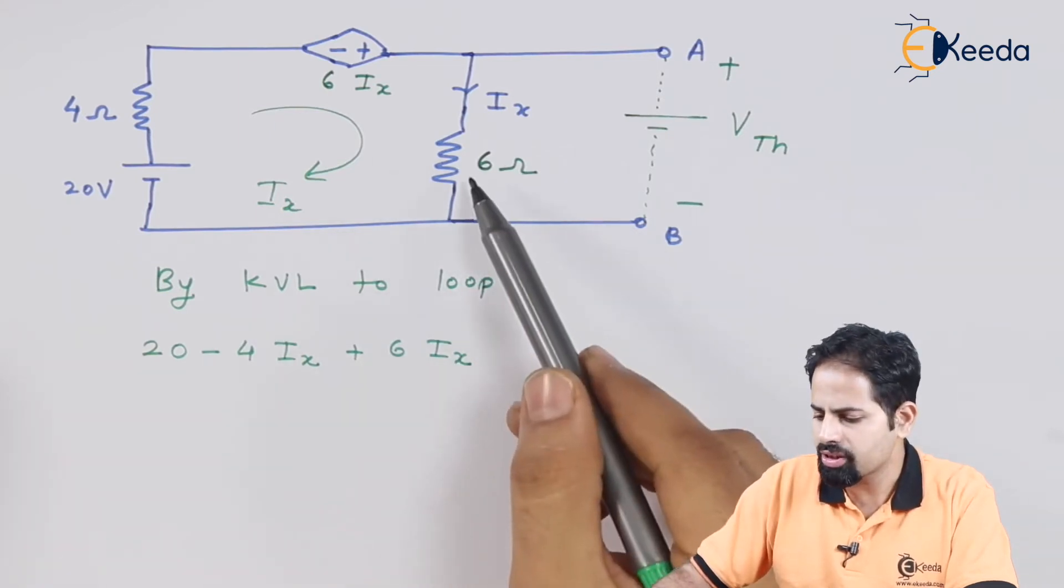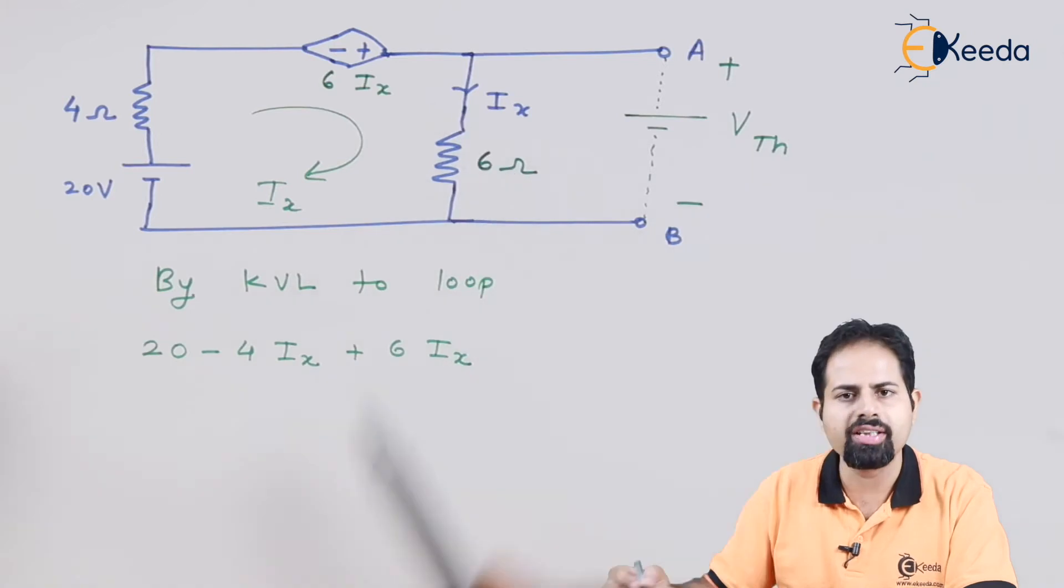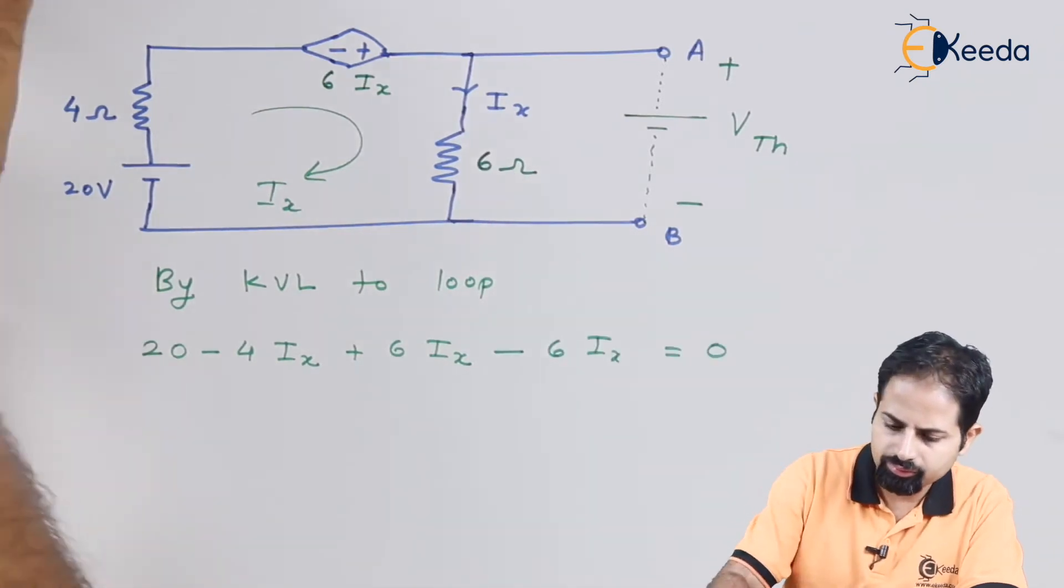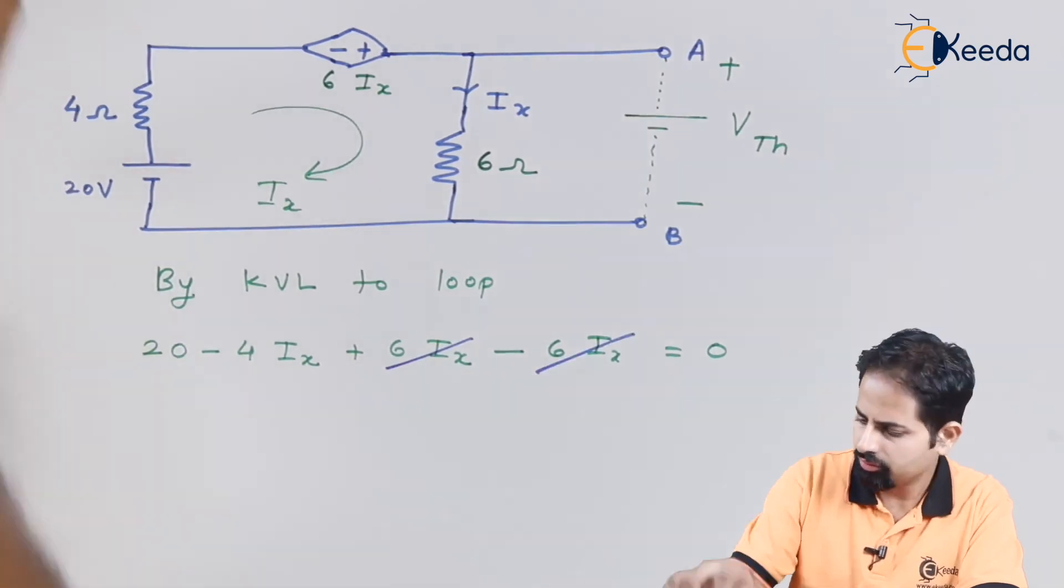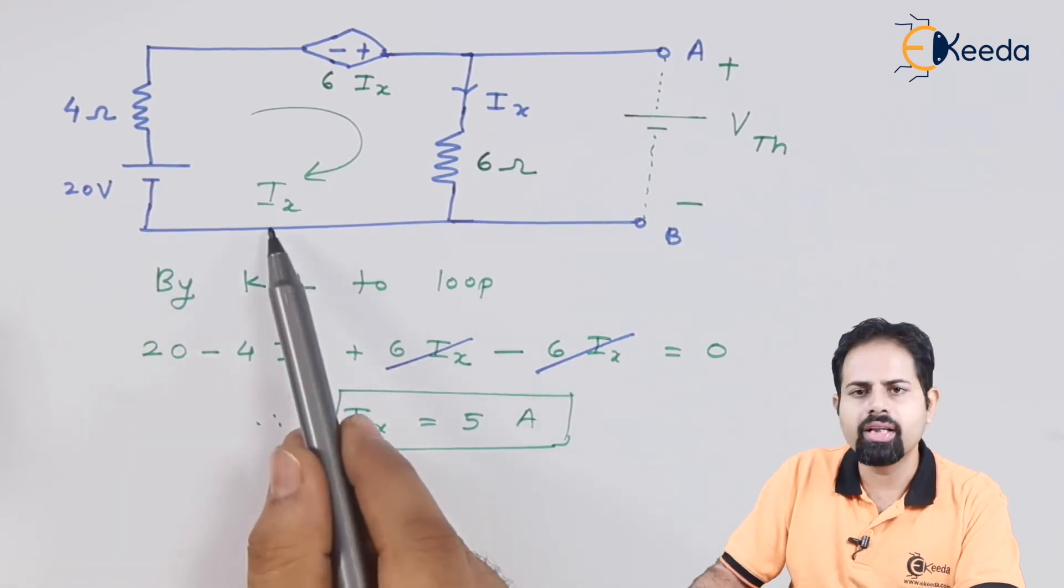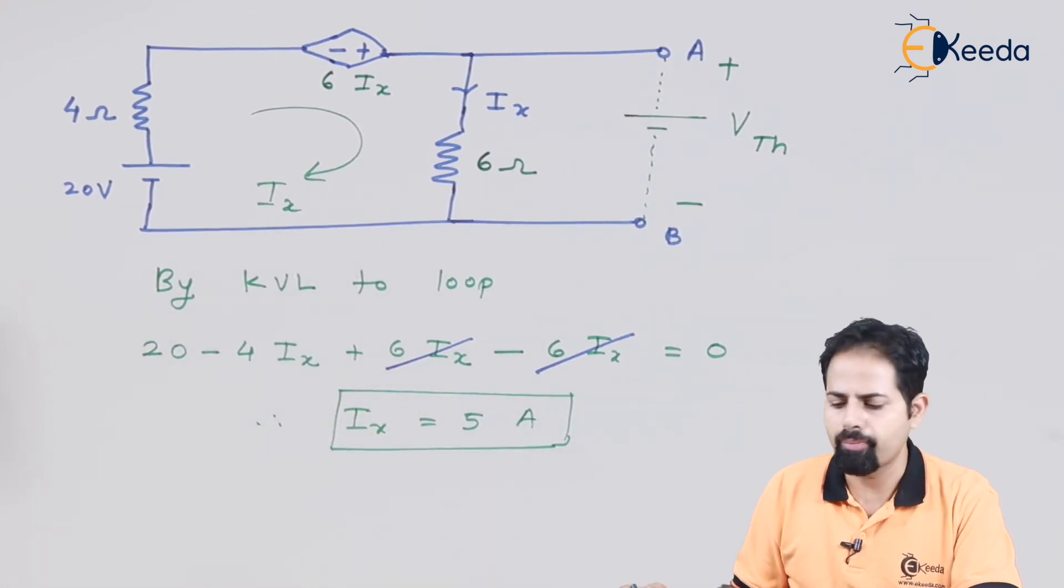And for this resistance, our loop and current direction are same, so it is going to be negative. So this will get cancelled.